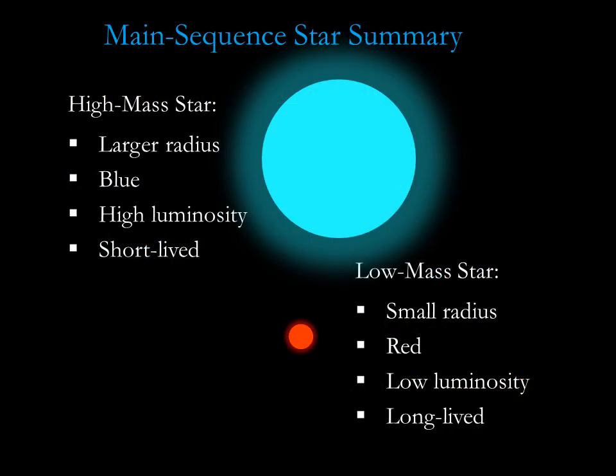To sum up main sequence stars, high mass stars are large, blue, bright, and short-lived. Low mass stars are small, red, dim, and long-lived.